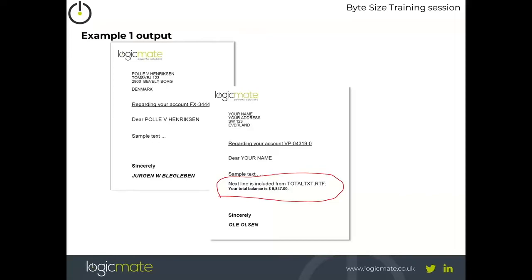I'm going to start off with an example output and work backwards to show you how that's constructed. In this case we've got two pages corresponding to two separate documents for different clients. On the left-hand side of the document you'll see the address and some text — that's been constructed by taking the data from a word document and merging it with information from a DB2 or a query file. The second document on the right-hand side has got some additional text in there.